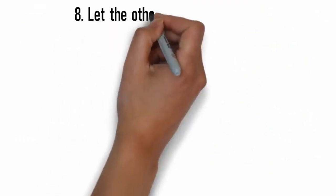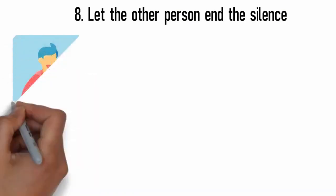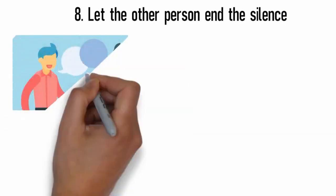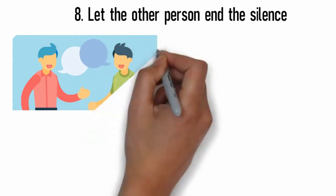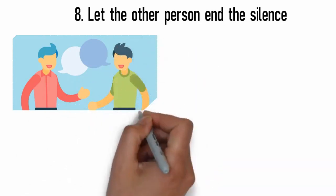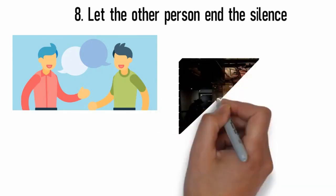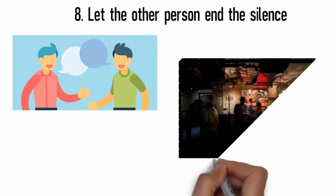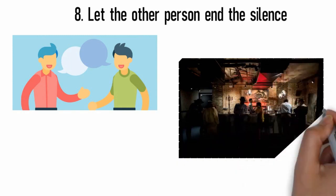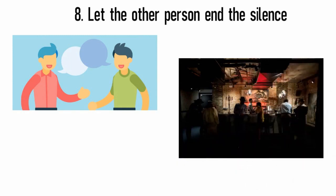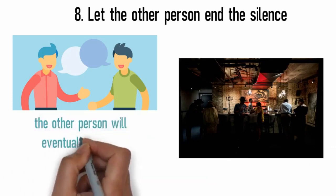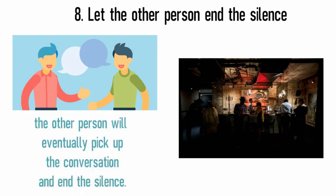8. Let the other person end the silence. Most people are uncomfortable with silences in a conversation. When one occurs, they immediately try to fill it by finding something to say. You can use this to keep a conversation going. When, for example, you've just met a person at a party, you're talking and the conversation is stalling, do not leave that person and go find the peanuts or something like that. Instead, hang in there and let the silence work for you. Most of the time, the other person will eventually pick up the conversation and end the silence.